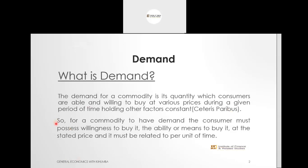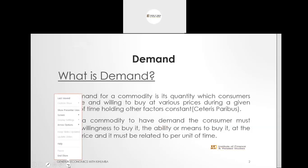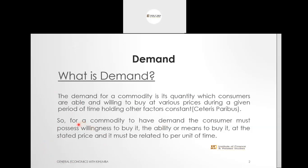We notice that for a commodity to have demand, it must have four elements. One of the elements is that the consumer must have the willingness to buy that commodity. He must also have the ability — that is, the means to buy it. There has to be a price or consideration, and it must be related to a unit of time for a specified period. Without any of those elements — the willingness, the ability, the price, and the time — there cannot be demand.